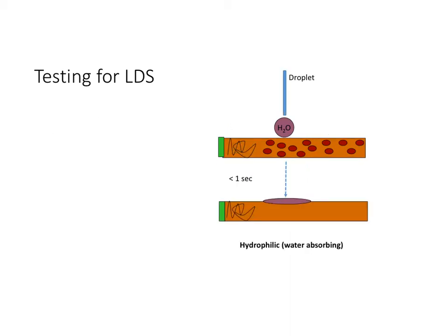Add a drop of water to the soil core. If the water droplet is readily absorbed into the core, then the soil is hydrophilic and the alleviation of drought symptoms should be accomplished with the addition of water. However, if the water droplet beads and does not move into the soil core, a hydrophobic soil condition likely exists.